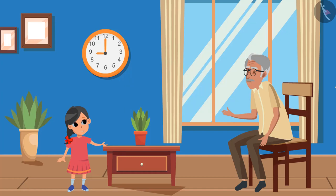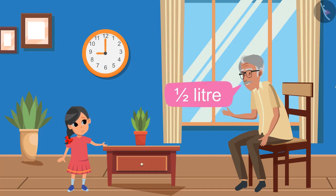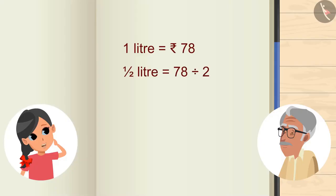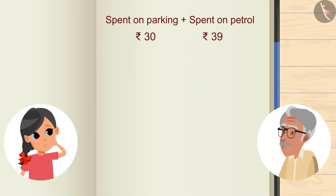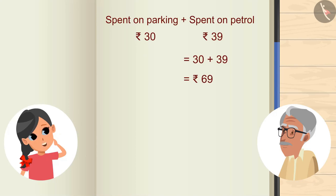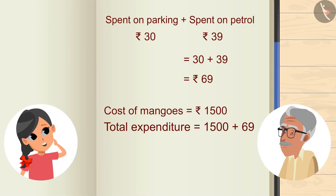Gudi asks how much petrol was used — about half a litre. Petrol costs 78 rupees per litre, so half a litre costs 78 divided by 2, which equals 39 rupees. Adding 30 rupees for parking gives 69 rupees. So the total expenditure is 1500 plus 69, which equals 1569 rupees.